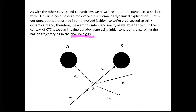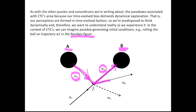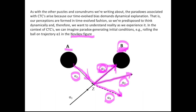Novikov famously imagined a pair of wormhole mouths he labeled A and B, connected such that if you went in on trajectory alpha-1 to wormhole mouth B, you would come out of wormhole mouth A on trajectory alpha-2, so as to collide with yourself and scatter in two directions — neither one of which is alpha-1 required for you to have gone into wormhole mouth B to come out of wormhole mouth A on trajectory alpha-2. Thus, you have a contradiction.